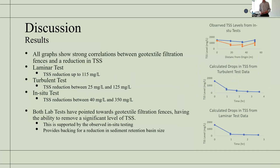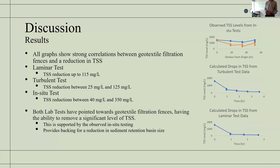The geotextiles in the laminar lab tests had reductions of up to 115 milligrams per litre. In the turbulent tests this went up to 125 milligrams per litre. This was backed up by the in-situ tests where the geotextiles had reductions of up to 350 milligrams per litre. While these tests weren't perfect, the results show the reduction capabilities of geotextile filtration fences, indicating that their implementation will reduce the size of sediment retention basins.